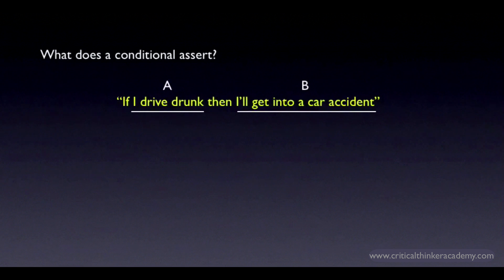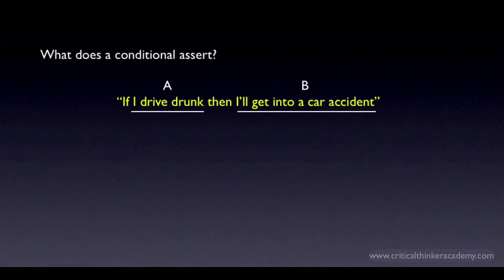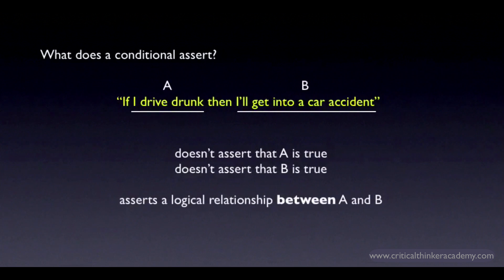It's pretty easy to understand what conjunctions and disjunctions assert. It's not quite as easy seeing exactly what it is that you're asserting when you assert a conditional. Here's a conditional: if I drive drunk, then I'll get into a car accident. If I assert that this is true, am I asserting that I'm driving drunk? No, I'm not. Am I asserting that I'm going to get into a car accident? No, I'm not asserting that either. When I assert 'if A then B,' I'm not asserting A and I'm not asserting B. What I'm asserting is a conditional relationship — a relationship of logical dependency between A and B. I'm saying that if A were true, then B would also be true, but I can say that without asserting that either A or B is in fact true.